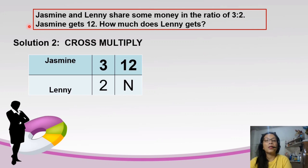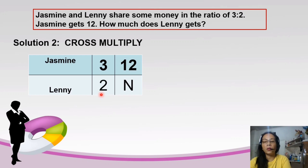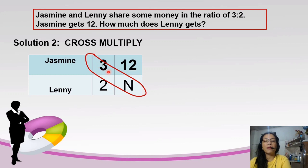Based on the problem, 3 represents Jasmine's share and 2 represents Lenny's. Jasmine has a share of 12. So for Jasmine we have 3 and 12, and for Lenny we have 2 and n, because we do not yet know the share of Lenny. The ratio of their shares is: Jasmine is 3, Lenny is 2. Let's find the value of n using cross multiplication.